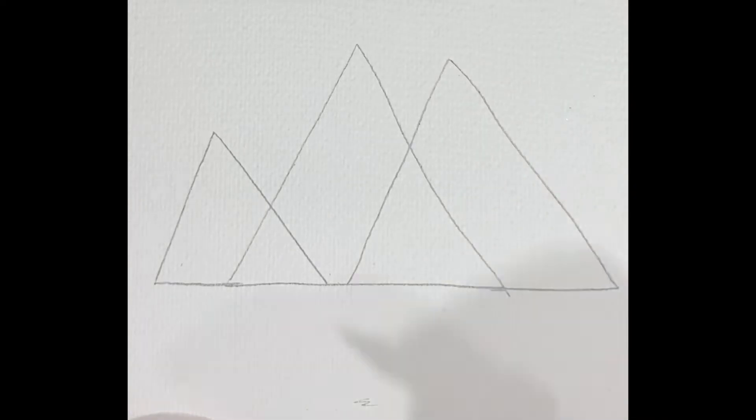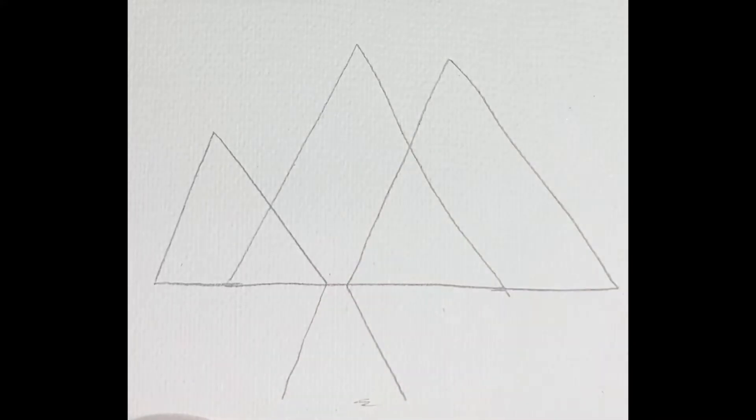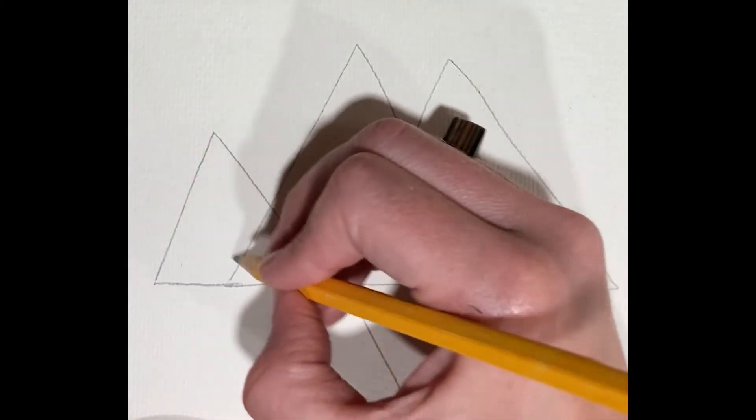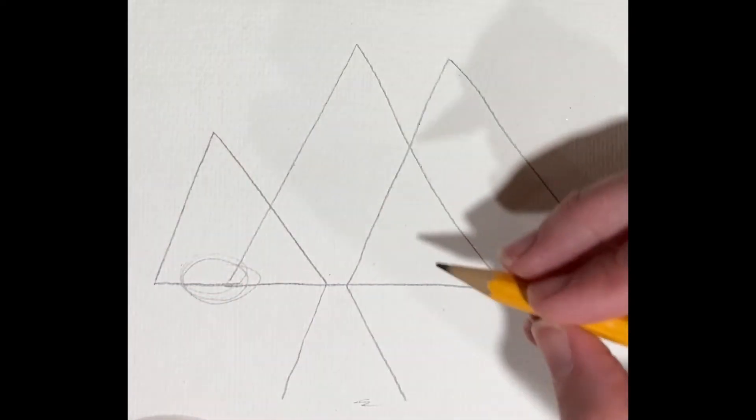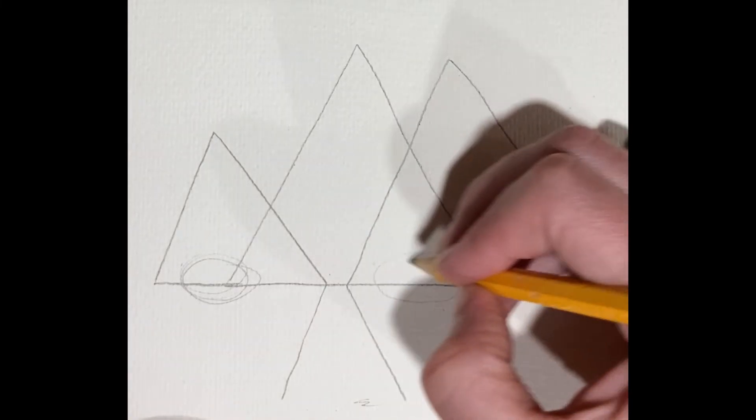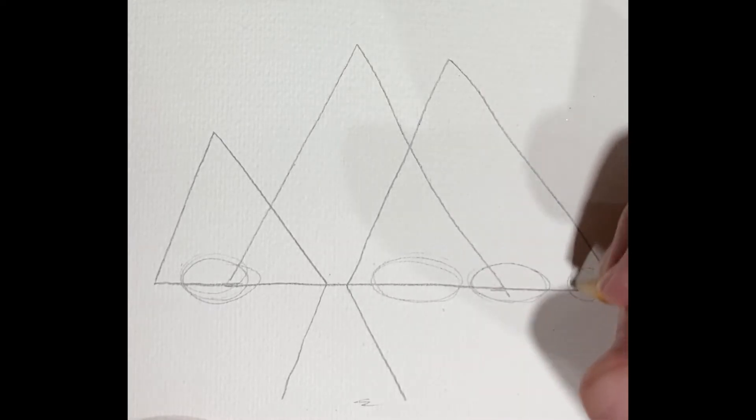Okay, now draw these two lines coming out towards you. That'll be the river. And we'll want to map out some places that we're going to put trees, so I'm just drawing some ovals right now to remind me not to forget that we want to put trees there.